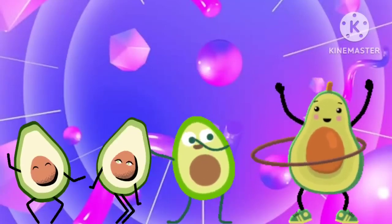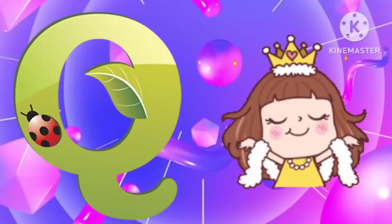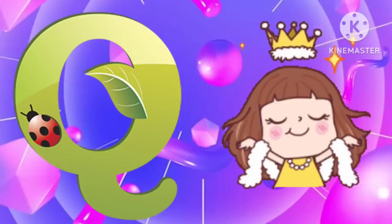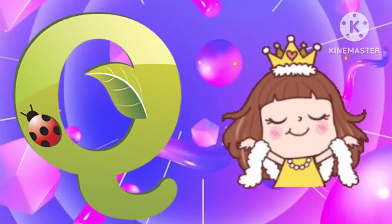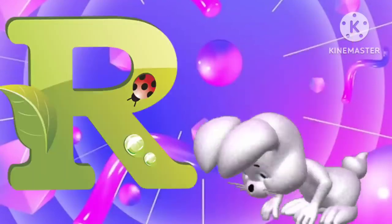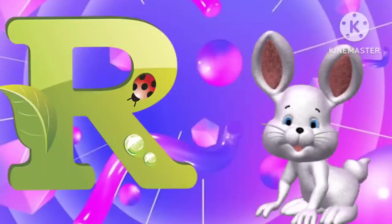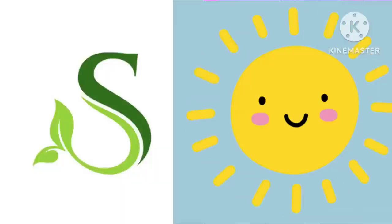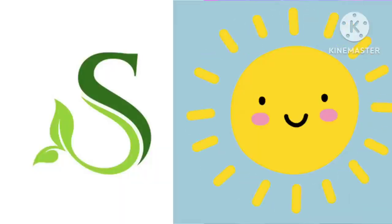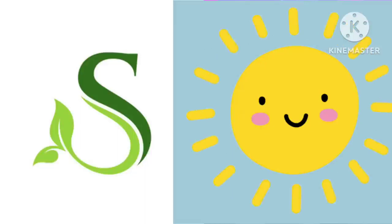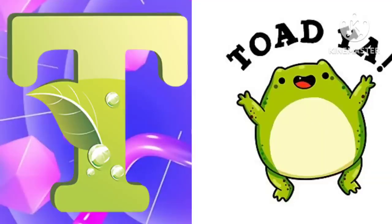Q is for queen, k-k-queen. R is for rabbit, r-r-rabbit. S is for sun, s-s-sun. T is for toad, t-t-toad.